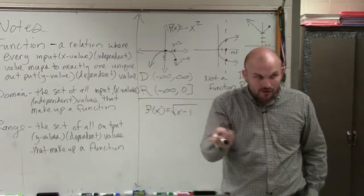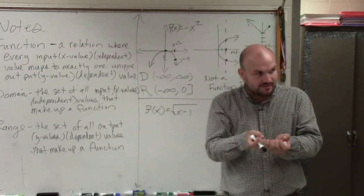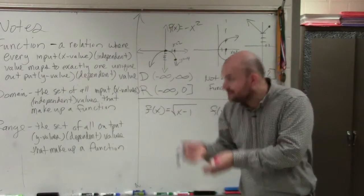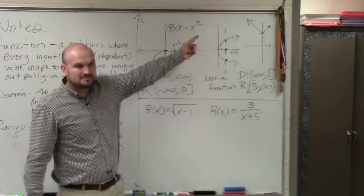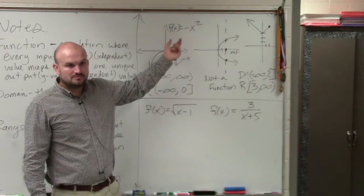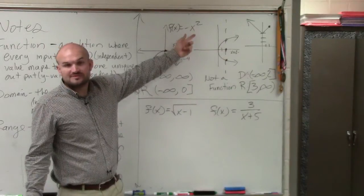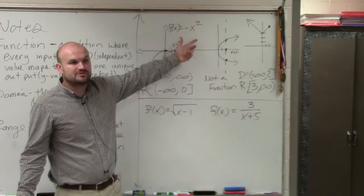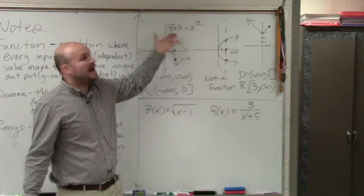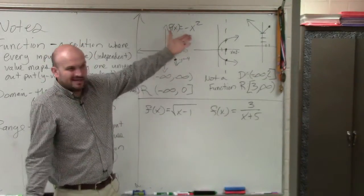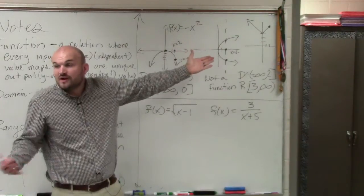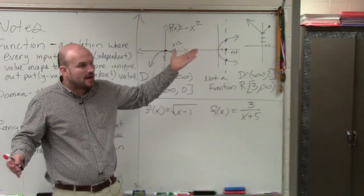A function is an input and output, right? You plug in a number, and you get an output. Is there any number I cannot plug in for x and get an output? Well, if you do 0, you'd have negative 0 squared, which would still be 0. So your output would be 0, which in the case, 0, 0 is a point. Is there any number that you cannot put? No, for every number, every input, you're always going to have an output.